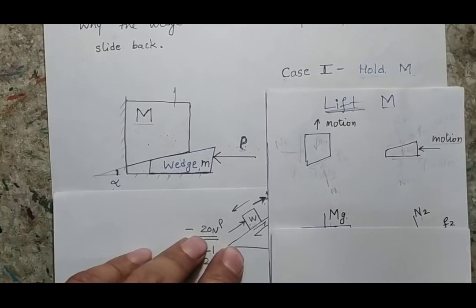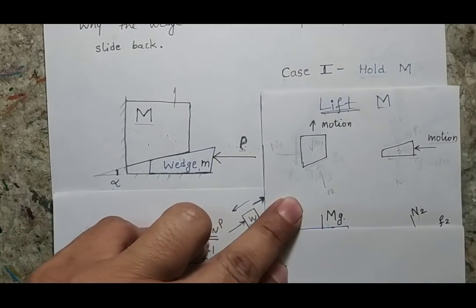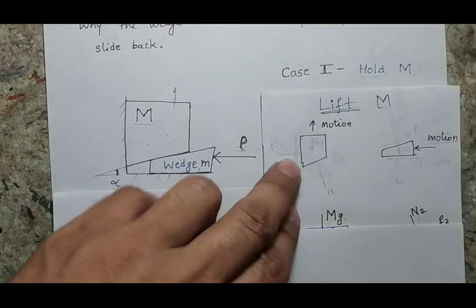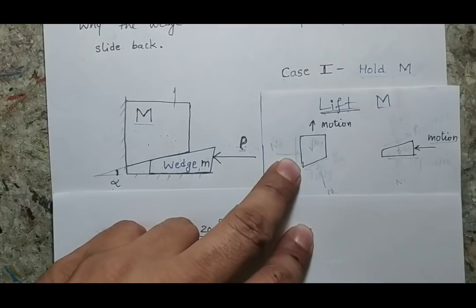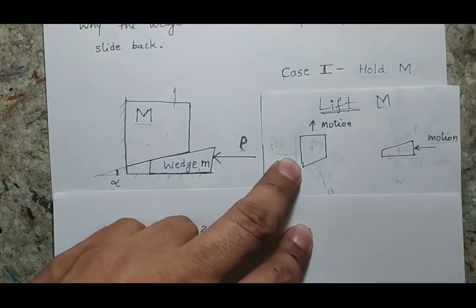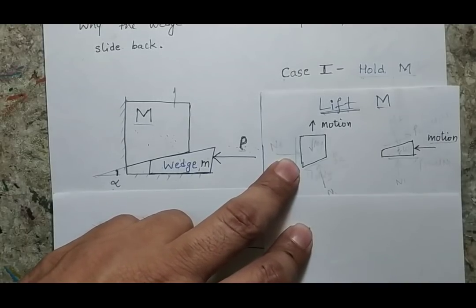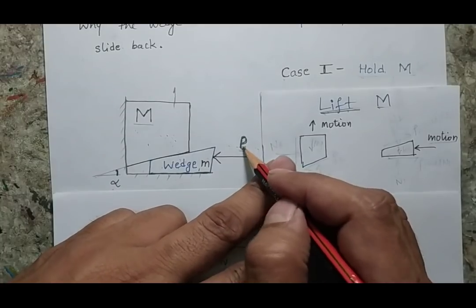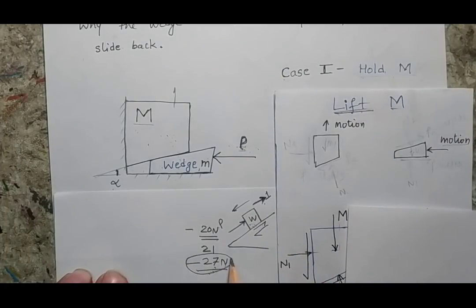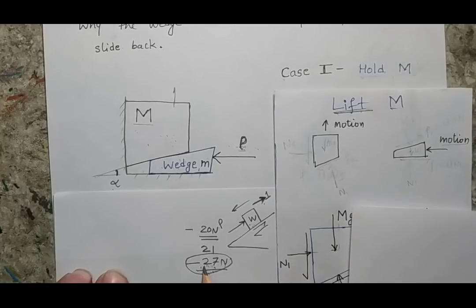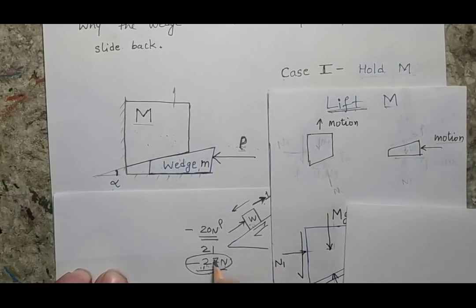Suppose I want to lift the body. That means P is just about to lift the body. If P increases by an infinitesimal amount, the body will lift. We are talking about the maximum value — an extreme condition where if the value increases beyond a small amount, the body will lift. Now let's understand how to define the direction of friction between all the surfaces, because the friction may be in one direction or the opposite direction.